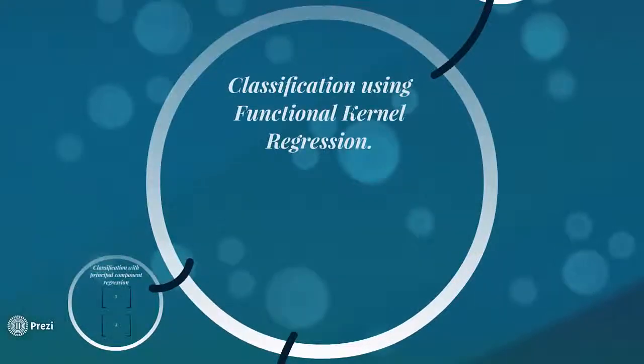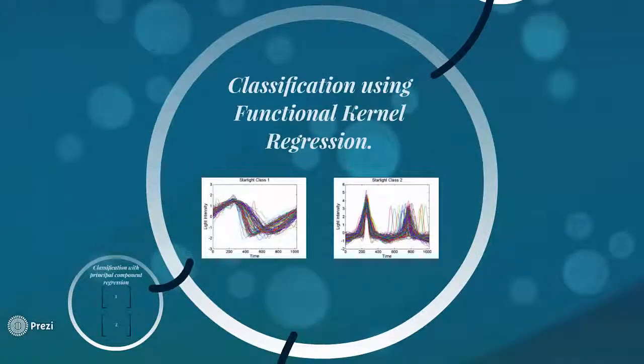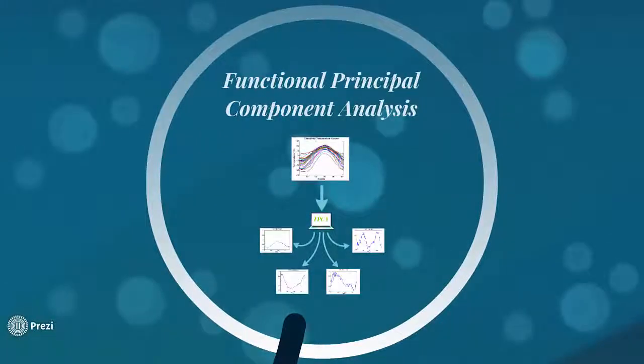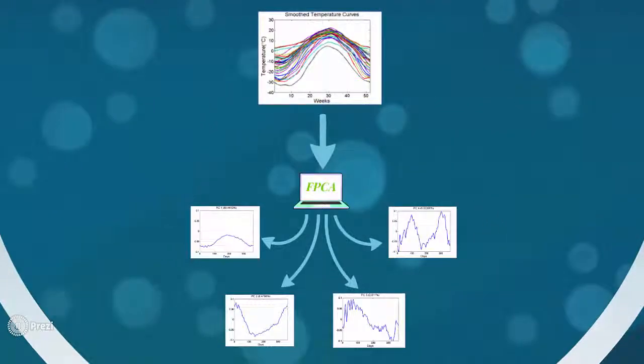The first method is classification using functional kernel regression. Given curves from two different classes of data, we want to be able to separate them into their respective classes. This requires three main steps. The first step is to find an exemplar curve for each class, and this is done using functional principal component analysis.